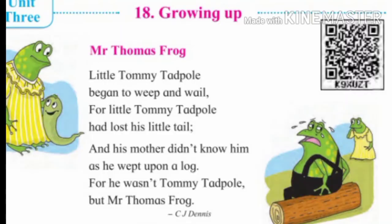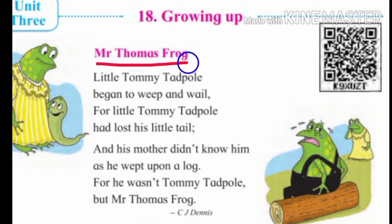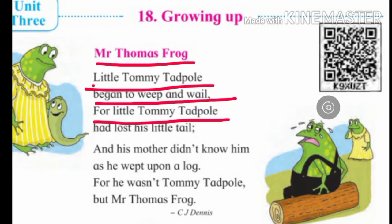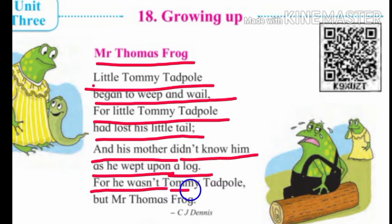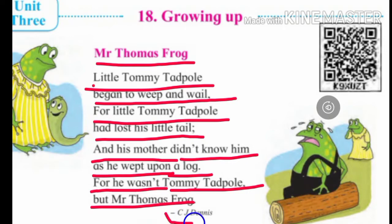Mr. Thomas Frog: Little Tommy Tadpole began to whip and wail, for little Tommy Tadpole had lost his little tail, and his mother did not know him as he wept upon a log, for he wasn't Tommy Tadpole but Mr. Thomas Frog. Poet: C.J. Dennis.